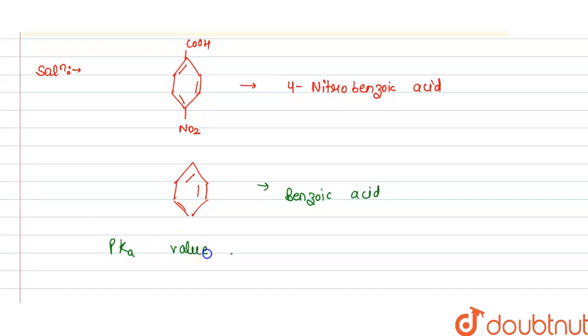pKa value of 4-nitrobenzoic acid is lower than benzoic acid, and this is because NO2 has electron-withdrawing nature.